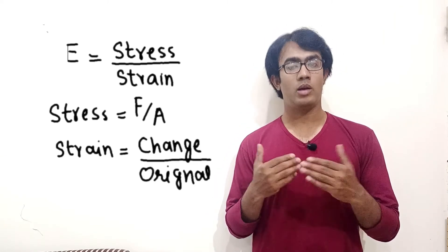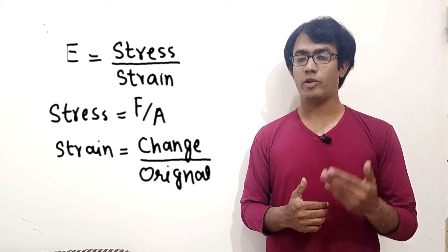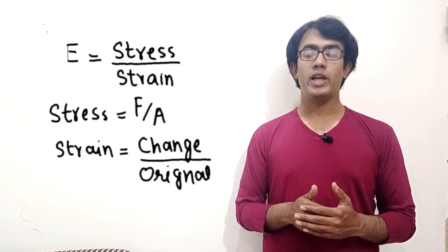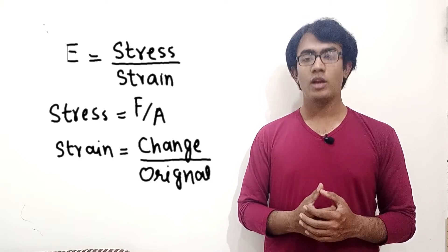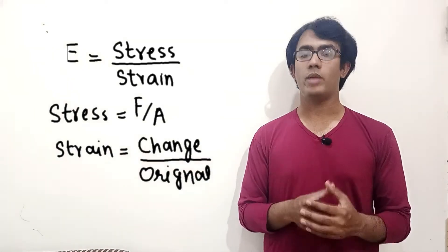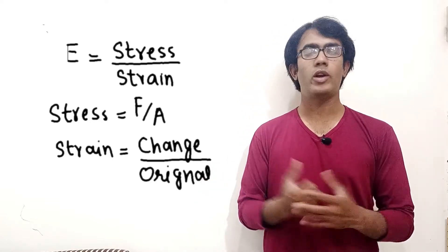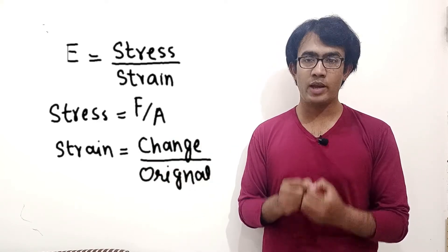For first-year students this may not be entirely new — you have studied this in class 9. Let's revise it once more. Elastic modulus is a ratio consisting of stress divided by strain. Stress means force per unit area, and if a body changes its shape as a result of that force per unit area, that change is called strain. So stress is the force applied over an area, and strain is the deformation that occurs in a body when a force is applied to it.